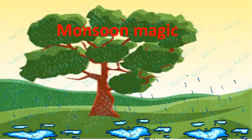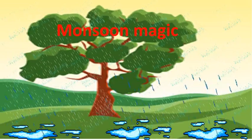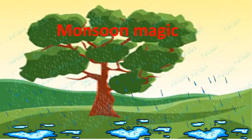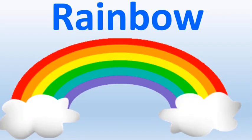Look at the screen to see few more things which are synonymous with this season. Now we will see few things which are synonymous with monsoon season — you can call them as monsoon magic as well. What can you see on the screen? It's a rainbow. Let's recite a poem named 'There is a Rainbow'.